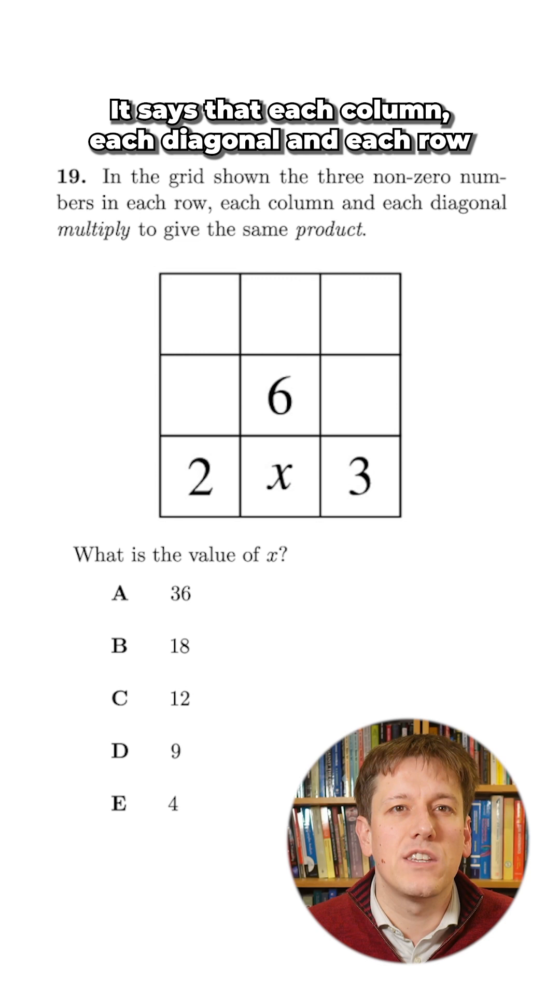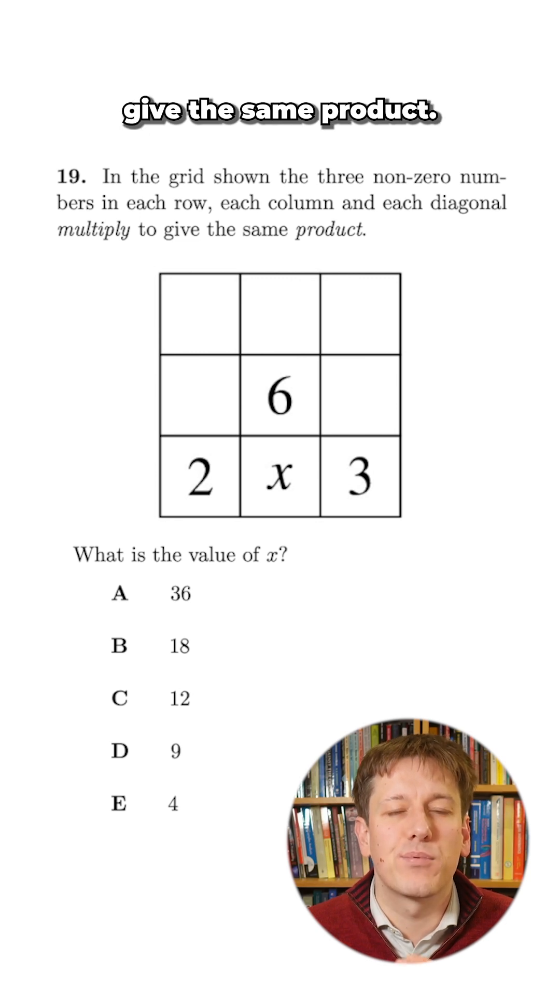It says that each column, each diagonal, and each row give the same product. So what's the value of x?